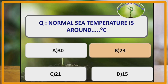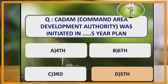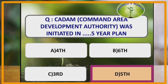Normal sea temperature is around how many degrees Celsius? The normal sea temperature is around 23 degrees Celsius. Command Area Development Authority was initiated in which 5-year plan? Command Area Development Authority was initiated in the 5th 5-year plan.